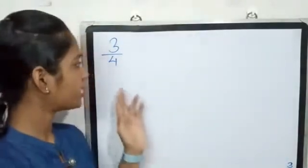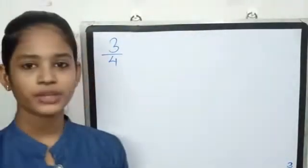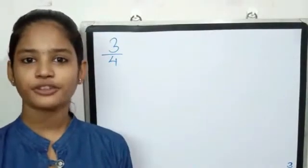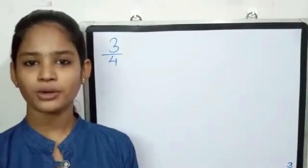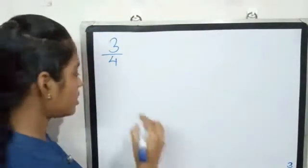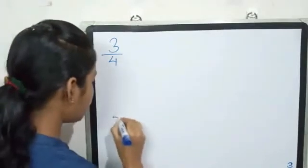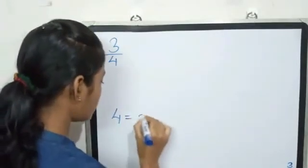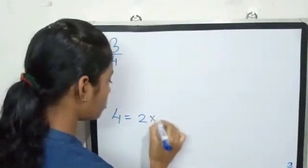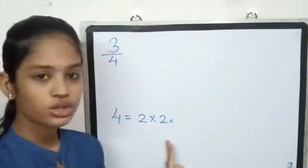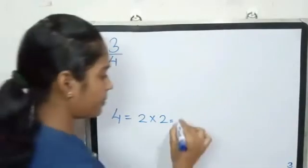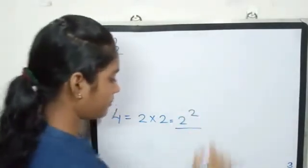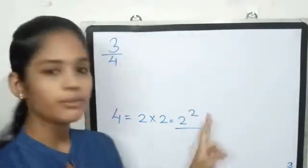First example: 3 by 4. 4 is the denominator and 4 is the power of 3. What will we do? What is 4 here? 2 into 2. Then 2 into 2. 4 into 2 into 2 is now.